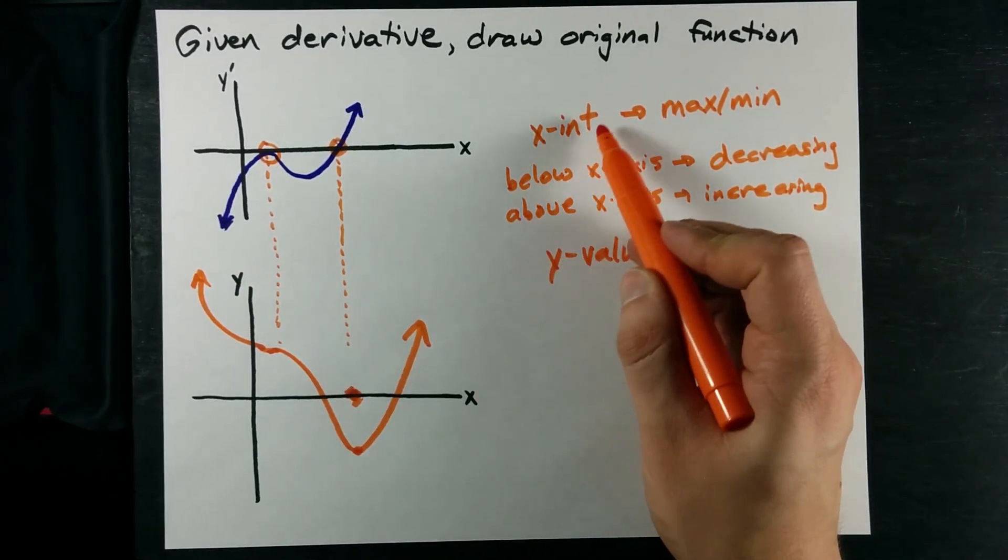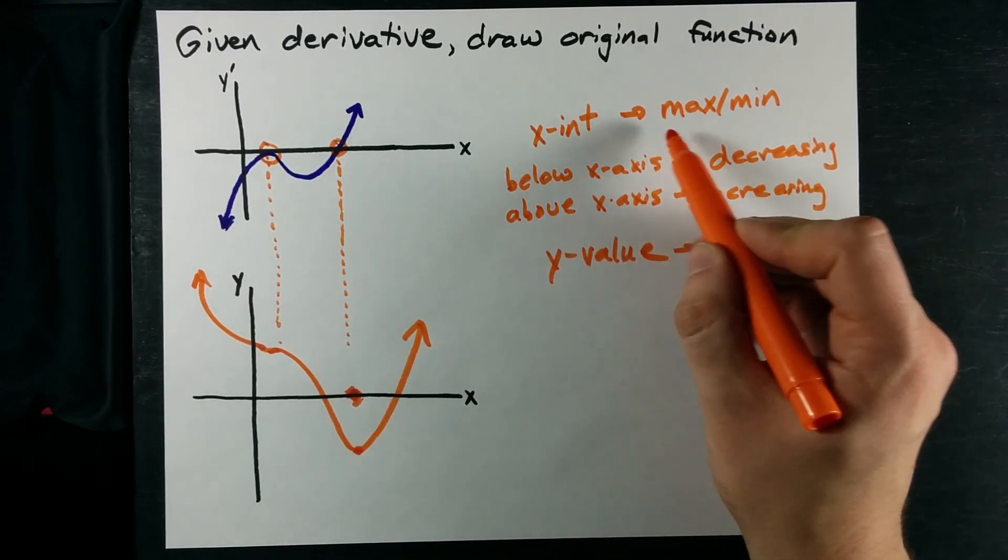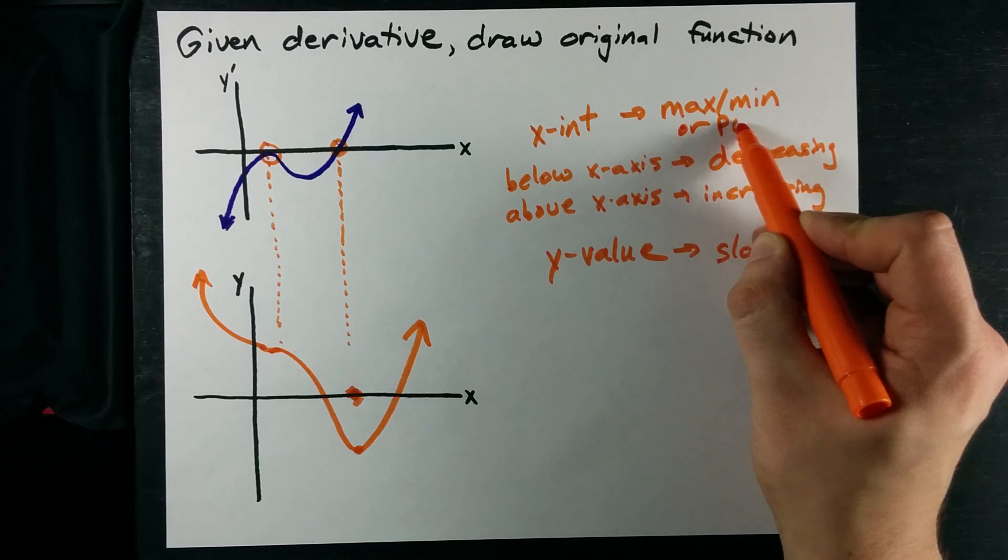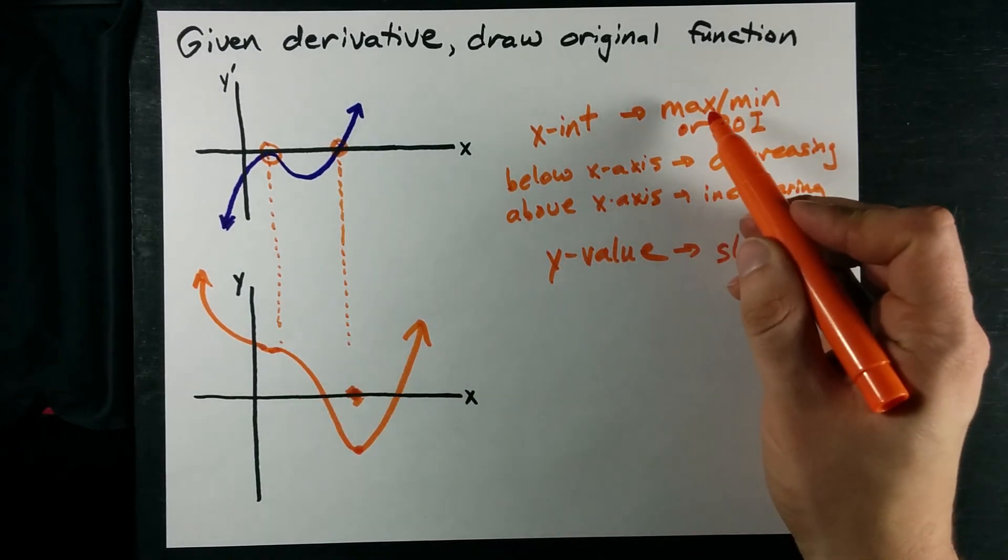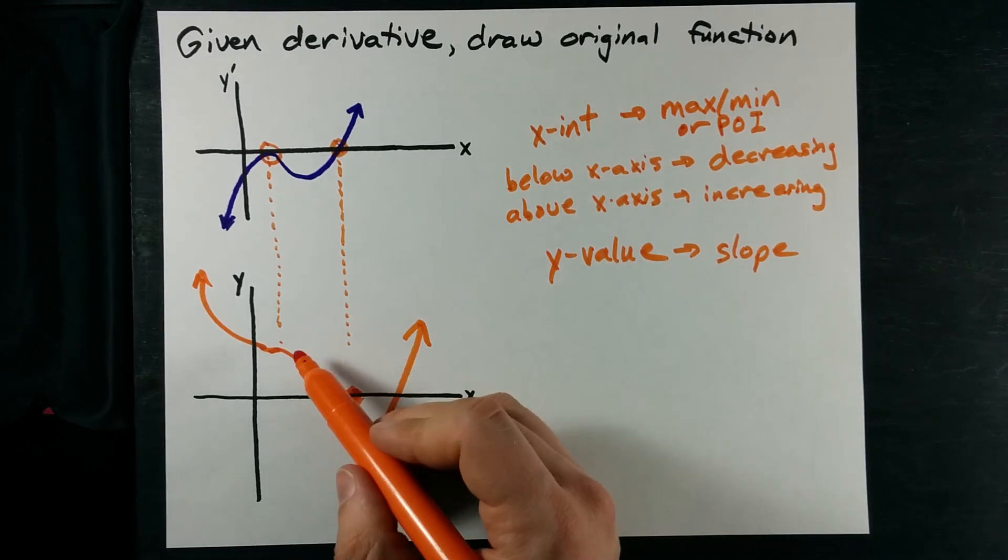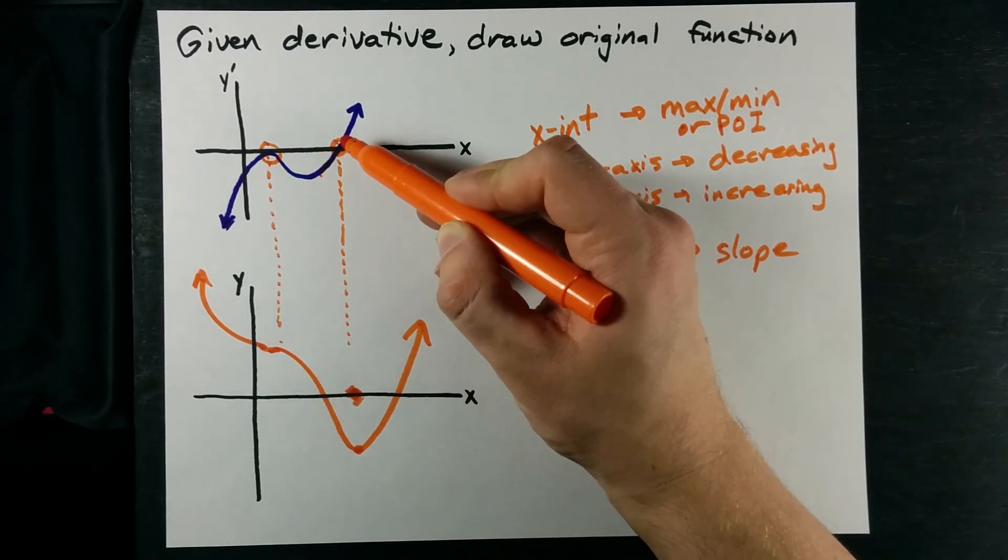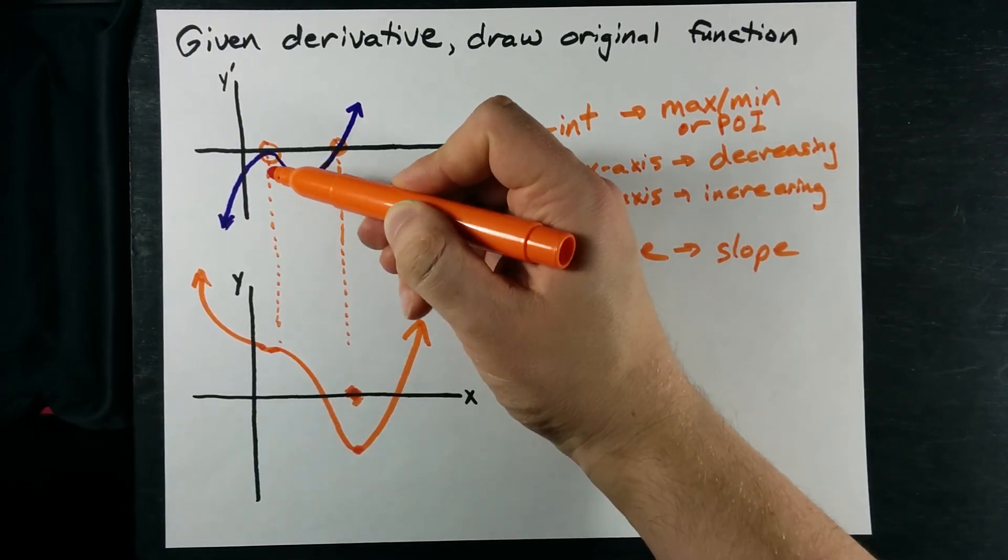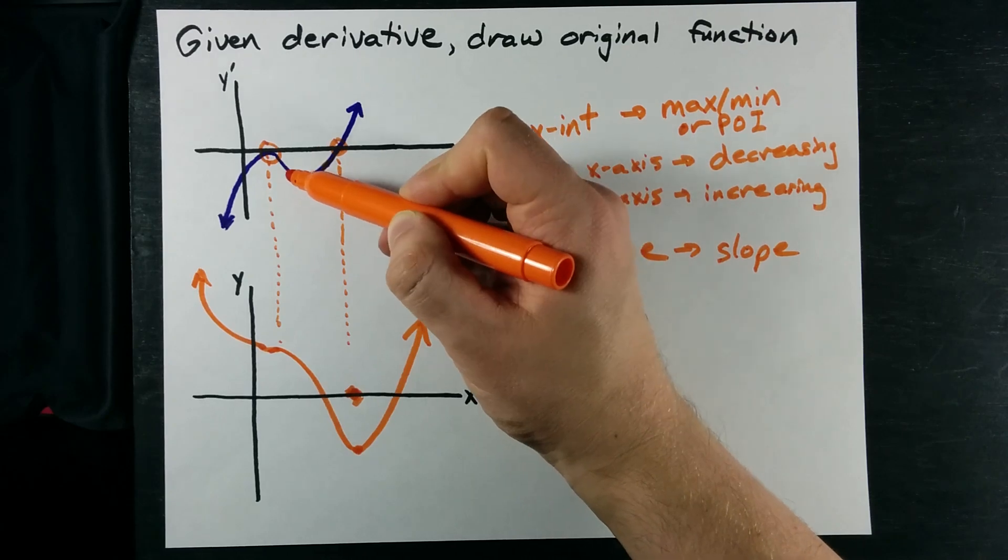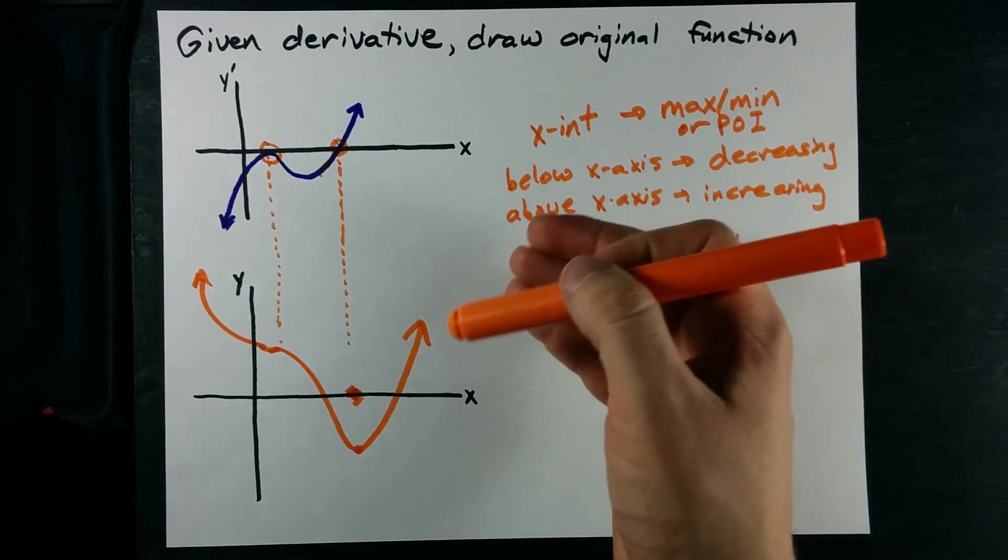Maybe I shouldn't have been so hasty here. x-intercepts on the graph of the derivative may also be points of inflection. This is not a max or a minimum. It's a point of inflection in that the slope is still zero. But it doesn't switch from decreasing to increasing the way this did. It's decreasing on the left-hand side and decreasing on the right-hand side. That's a telltale sign of a point of inflection. Cool?